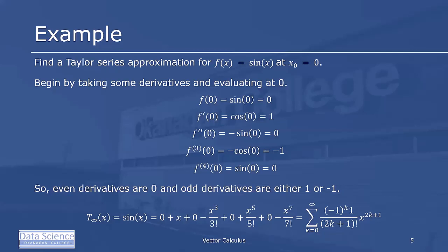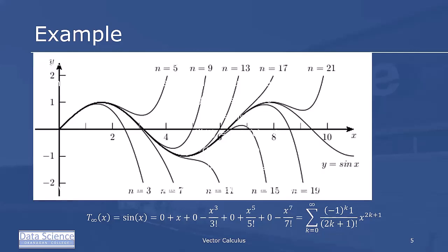Now to see how well this actually fits our data, take a look at the following diagram. We can see that for n equals 3, we have a pretty decent representation of y = sin(x) close to 0.